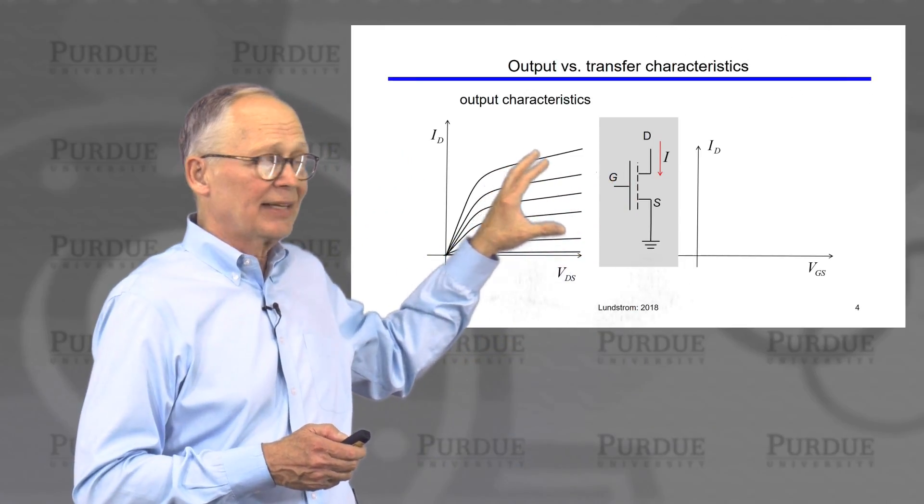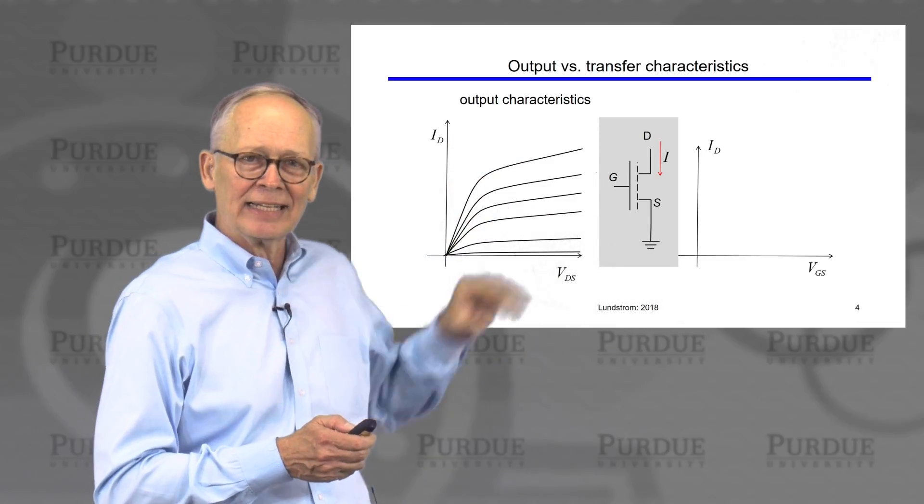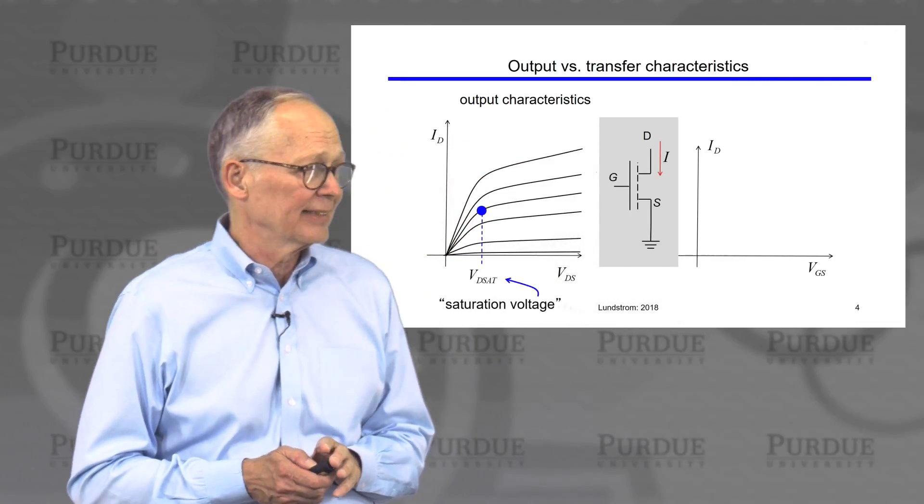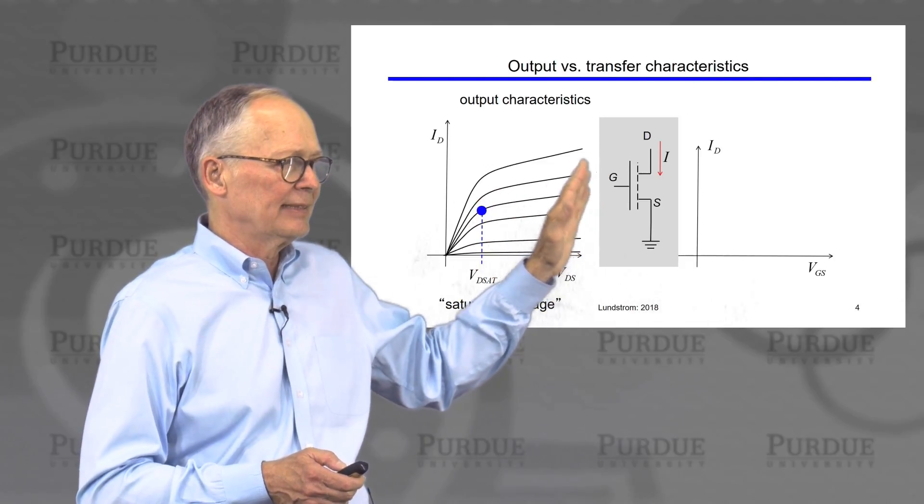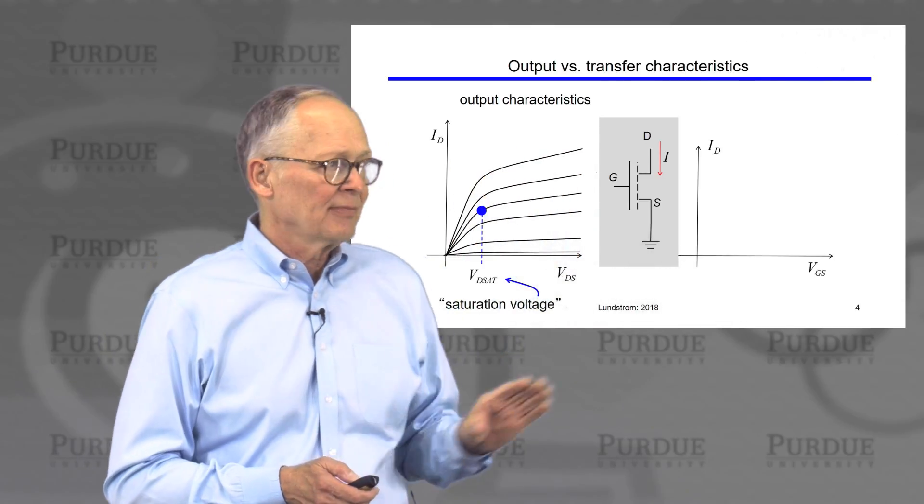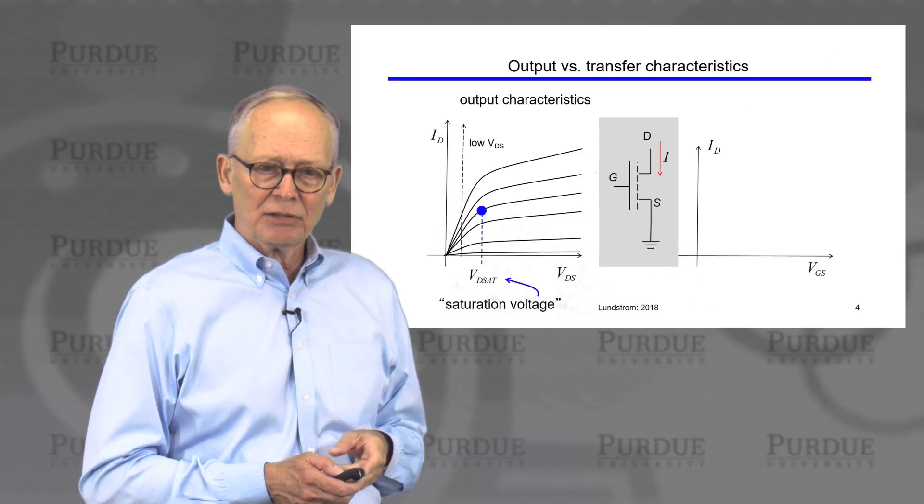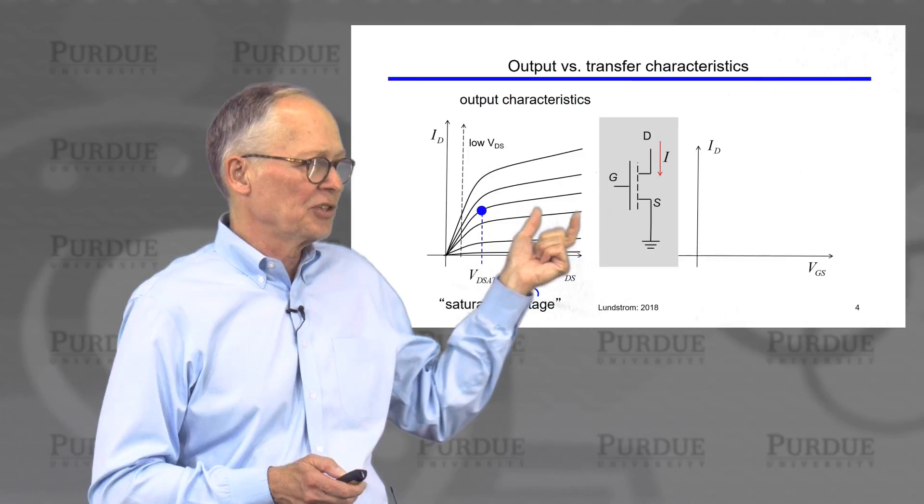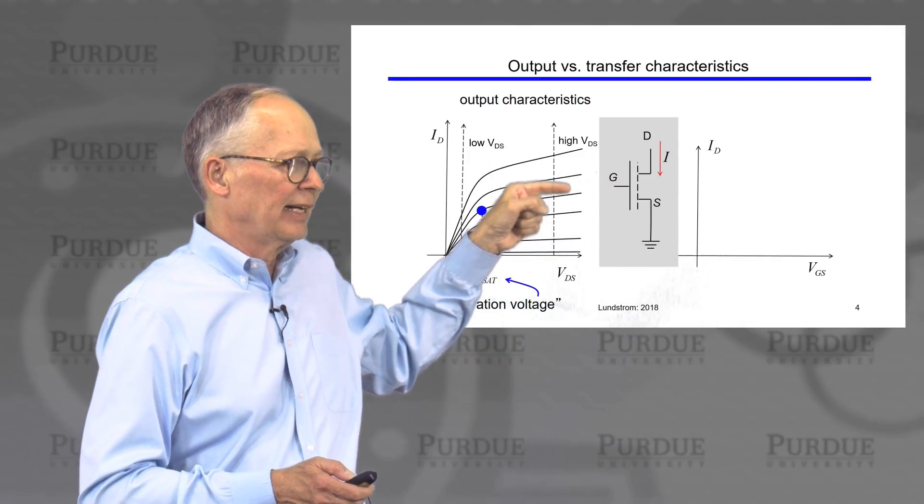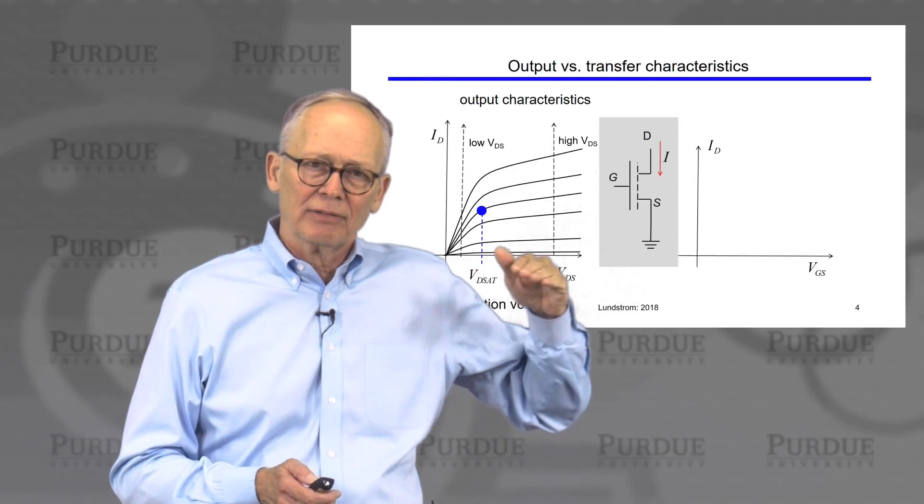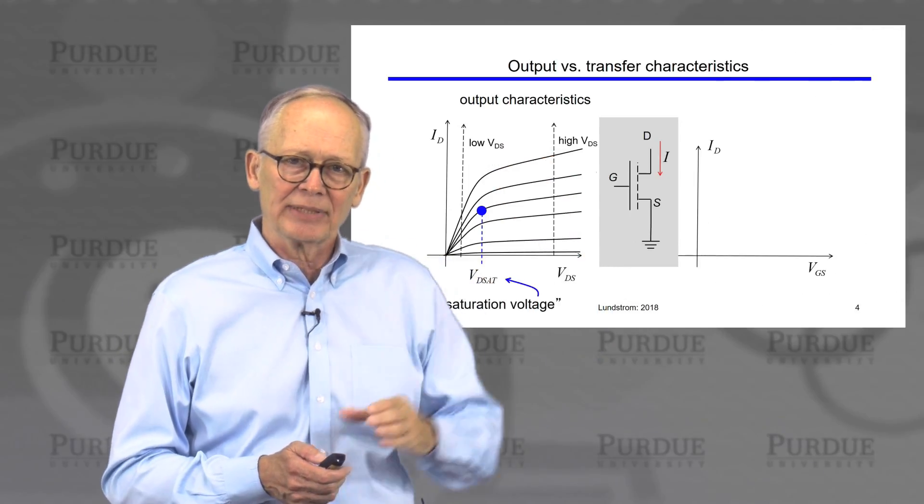The output characteristics have this classic look of transistors. This is what transistors look like. They have output characteristics like this. There is a critical voltage that divides these characteristics into two regions. If the drain voltage is small, then we're at the linear regime. If the drain voltage is large, then we're in the saturation regime. Each one of these lines on the characteristic refers to an increasing value of the gate voltage as we step the gate voltage up.